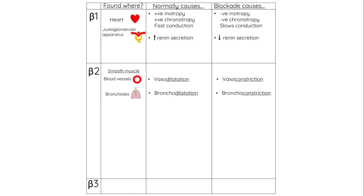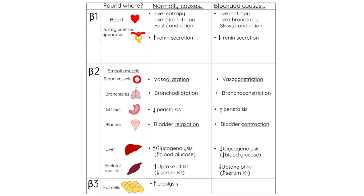Those are the main clinically relevant effects of beta-1 and beta-2 receptors and their blockade. There are other locations of beta-2 receptors listed on this table, but they won't be covered in this video. It's also worth noting that there are currently no clinically relevant beta-blockers that target beta-3 receptors, so those have not been covered here.